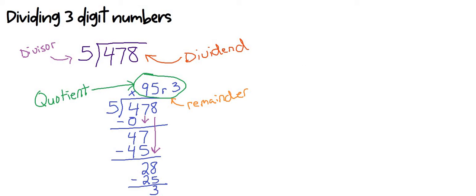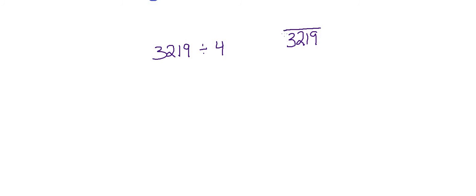Now let's try some more practice — it helps to write this down because every time you write things down, it sticks in your brain a little bit better. I'm going to challenge you with a bigger number: 3,219. Sometimes you'll see it written with a division sign, but we're going to rewrite it as 3,219 in the box divided by 4. So 3,219 is our dividend and four is our divisor.